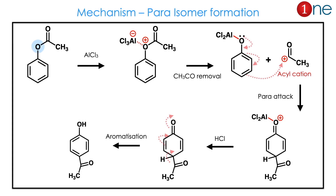Now we will see the mechanism for para isomer formation. For the para isomer, the acyl cation removal is the same. Electron rearrangement occurs, similar to the ortho situation at the oxygen. What really happens is indirect aromatization instead of tautomerization — the hydrogen travels a greater distance, so it is aromatization. Stability drives the aromatization, and you get the para product.